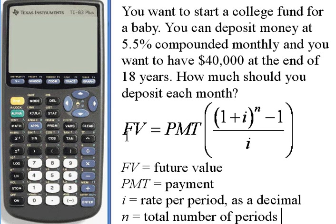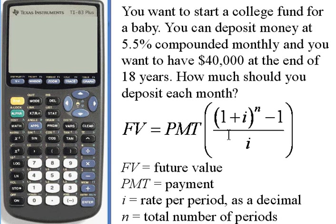We're going to do this with a TI-83 calculator. Rather than do the whole problem all at once, I'm going to start out and figure out what i is in the numerator, then add 1 to that, raise it to the n power, subtract 1, and divide that answer by i. That gives us future value equal to the payment times some number. Since I know the future value is $40,000, I'll divide $40,000 by that number to find the payment.